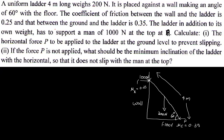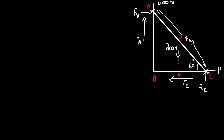The support provides a reaction. The resistance is a reaction RC. You have to consider which side is slipping, then take the friction force accordingly. The friction force F is equal to mu times RN, that is F equals 0.25 RN.